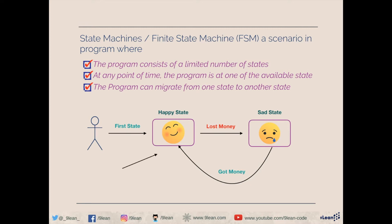The things like 'lost money' and 'got money' are called events. Events are environmental triggers that cause migration from one state to another state. We would not transform from happy to sad in the same environmental situation — something must have happened to trigger that change.